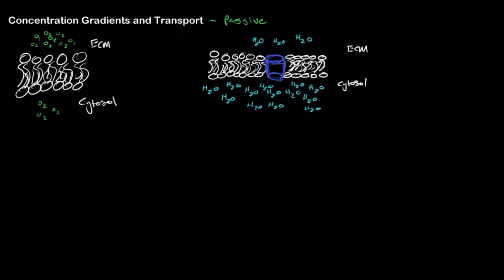We're looking at passive transport. On the image on our left we're dealing with a small non-polar molecule. These molecules are going to passively diffuse down the phospholipid bilayer, moving from a high concentration to a low concentration — moving down the concentration gradient. So from the extracellular matrix into the cytosol or cytoplasm of our cell.